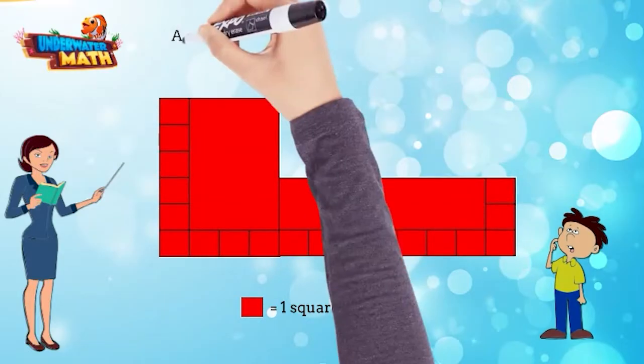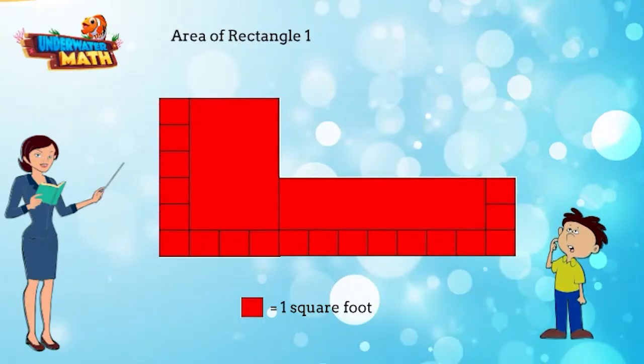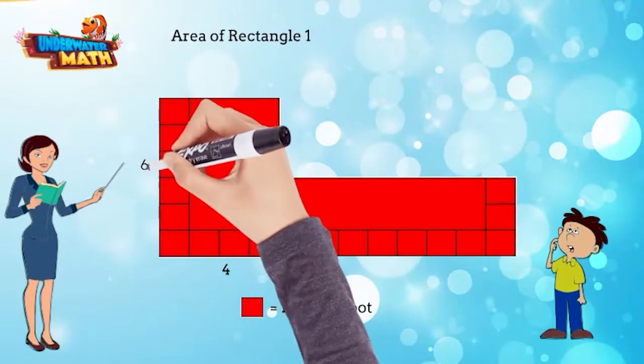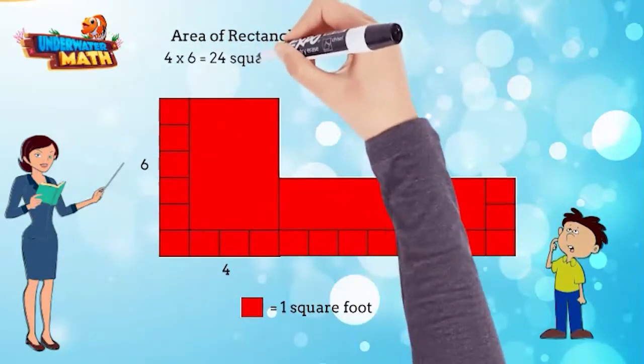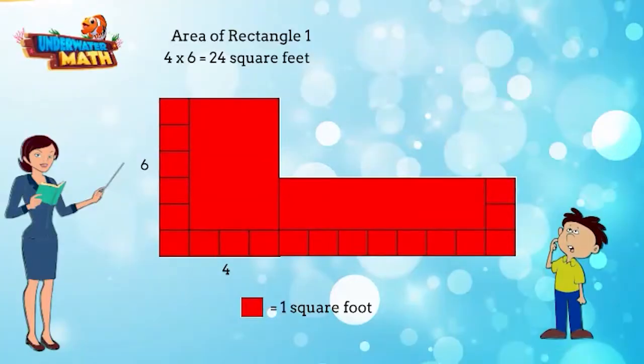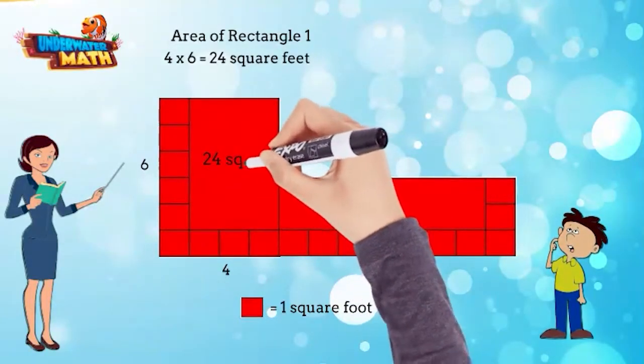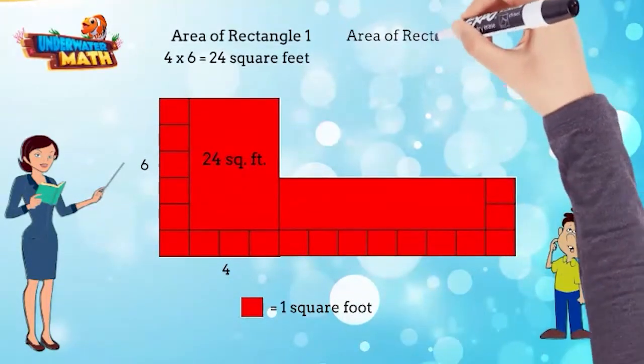First I find the area of the first rectangle. The length is four and the width is six. Four times six equals 24. The area of rectangle one is 24 square feet. Now let me find the area of rectangle two.